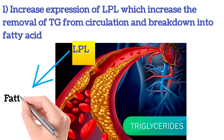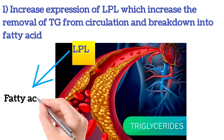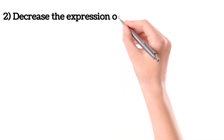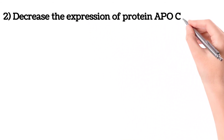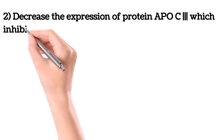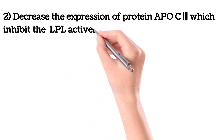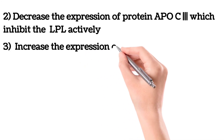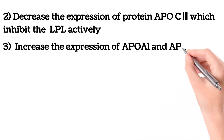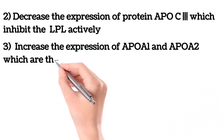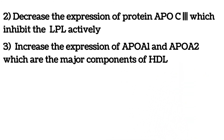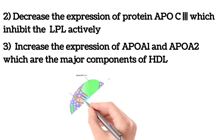Fibrates also decrease the expression of apoprotein C3 (ApoC3), which normally inhibits LPL activity. They increase the expression of apoprotein A1 and apoprotein A2, which are the major components of HDL, the good cholesterol in our body.